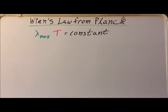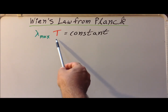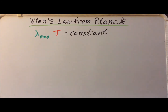Recall that we can write the Wien displacement law in the following form: lambda max times the temperature is equal to a constant, where lambda max is the wavelength at which the greatest amount of energy is produced by a black body radiator.